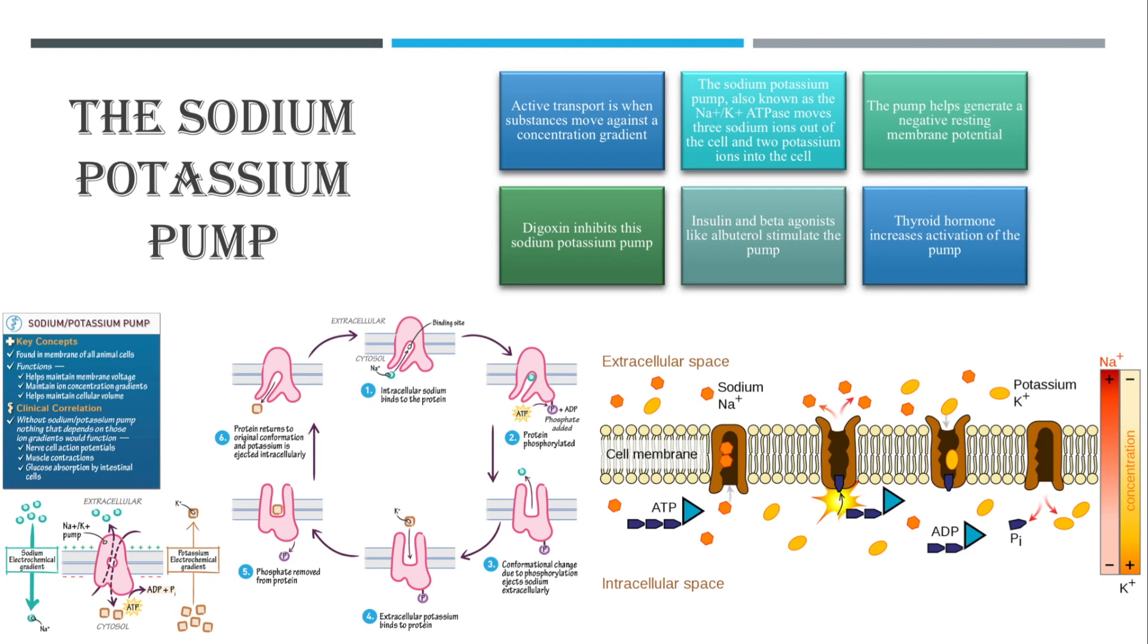Lastly, something else that can influence this pump is thyroid hormone. If someone has hyperthyroidism in which they have too much thyroid hormone, it can increase metabolism because it will increase the sodium potassium pump activation, causing your body to use up more ATP and more energy.